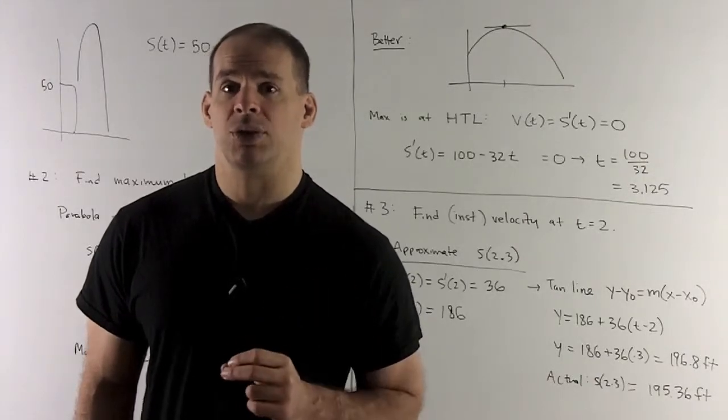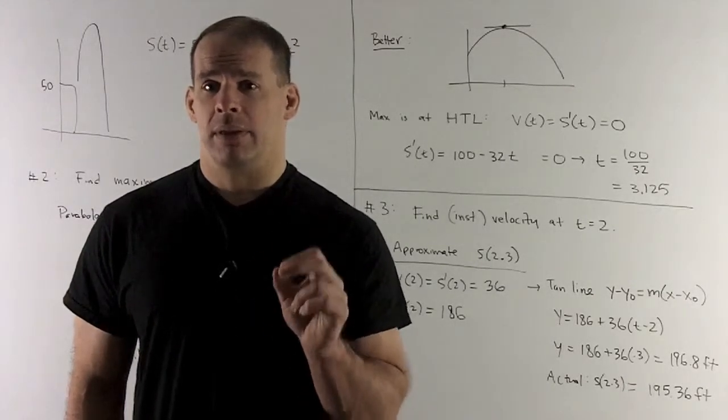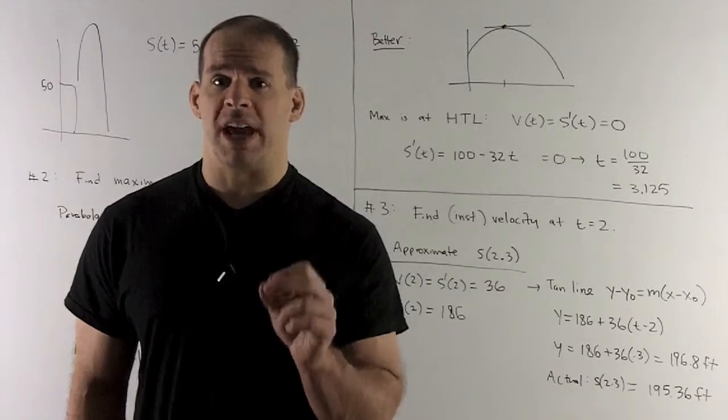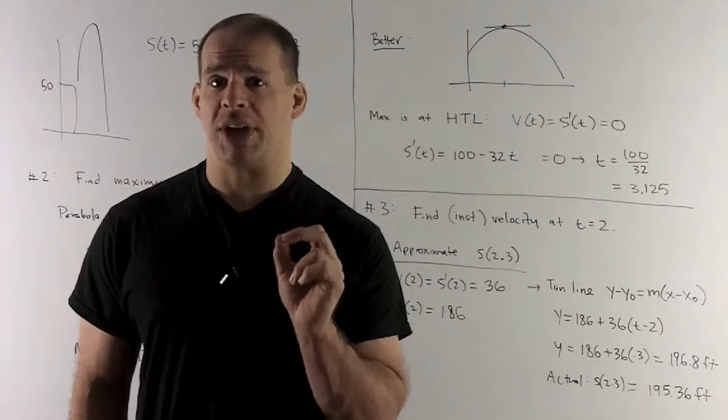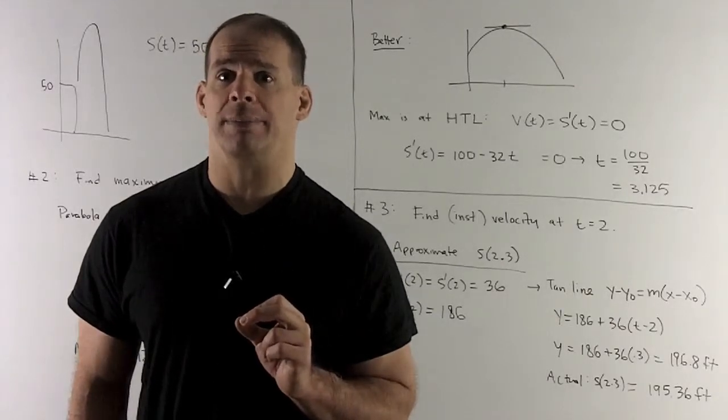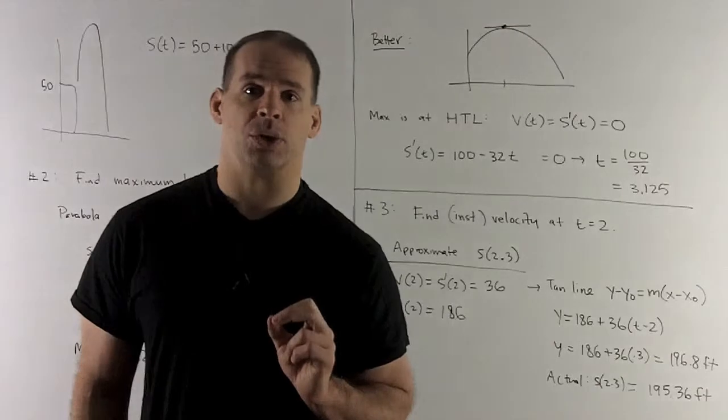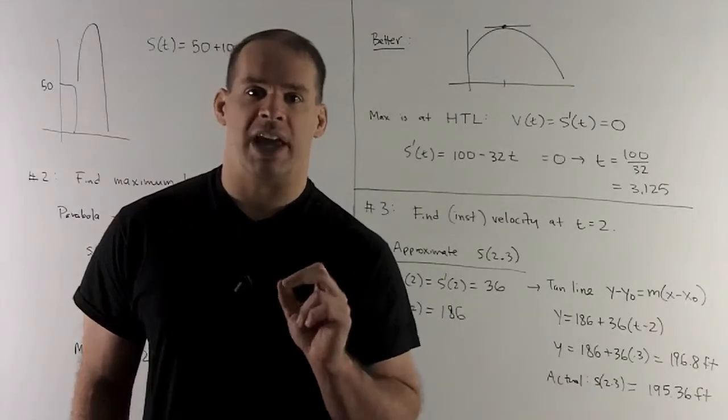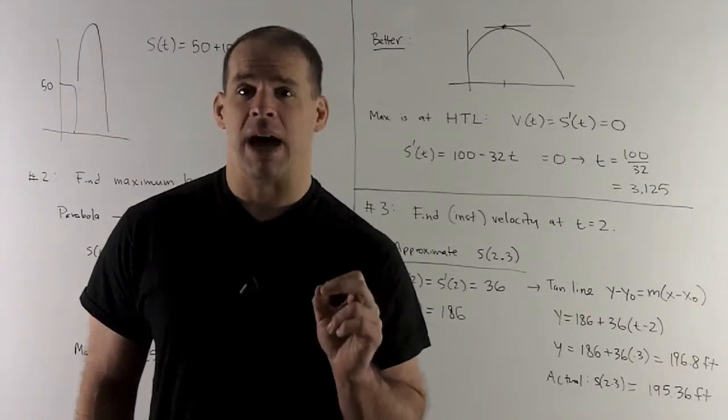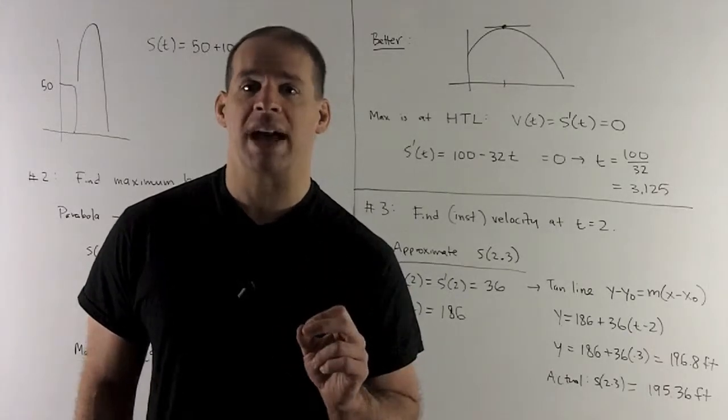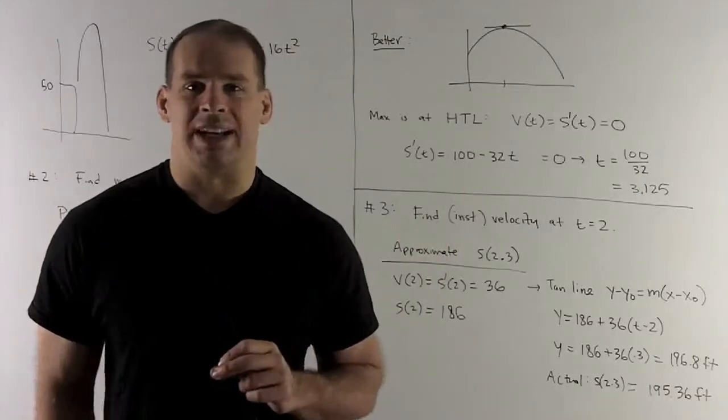To approximate position at 2.3, what am I going to have to do? Well, remember, velocity is derivative of the position function, so that's going to be the slope of the tangent line to the position function's graph. So that's going to be the slope of my tangent line, that 36 feet per second. So all I need is a point to get an equation of the tangent line. I'm going to take our point at 2. So I put 2 into the equation. What's that going to give me? That's going to give me 186 when you work it out. So now I have an equation of a tangent line. It's going to be y minus 186 feet equals 36 feet per second times t minus 2 seconds. I can push the 186 to the other side, and now I can put a 2.3 in there to get our approximation. So our approximation winds up being 196.8 feet.